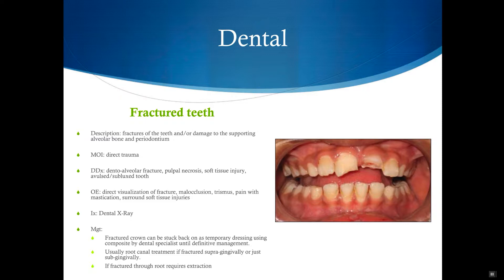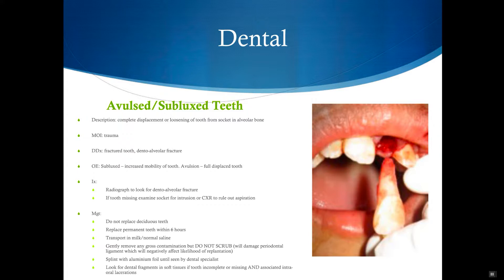Avulsed and subluxed teeth — that's where the tooth actually comes loose from its socket within the alveolar bone. The differential is other dental injuries. On examination, you can actually move the tooth. The difference between this and a dental alveolar fracture is that it's usually an isolated tooth. Sometimes you may have two teeth back-to-back that are subluxed, but you should be able to move them in different directions, as opposed to a dental alveolar fracture where the segment moves as one altogether.